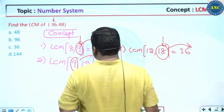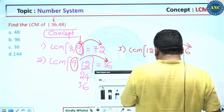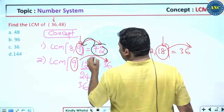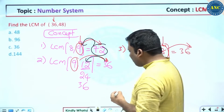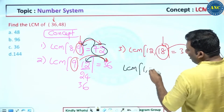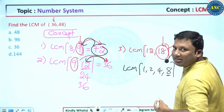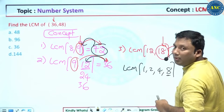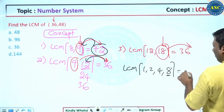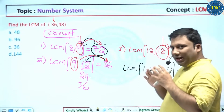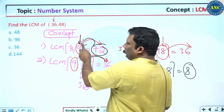Another concept: the LCM is always greater than or equal to the largest number. For example, LCM of 1, 2, 4, 8 — the largest number is 8. Is 8 divisible by 1? Yes. By 2? Yes. By 4? Yes. So the answer is 8 itself. LCM of any numbers is always greater than or equivalent to the largest number.